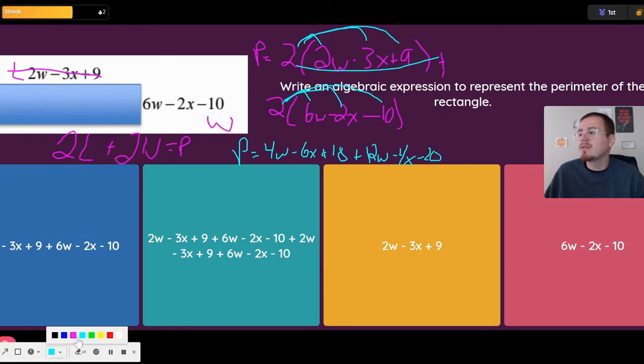You might say that's your answer and you could technically be right, but you need to make sure that you simplify. We're going to combine all like terms. I got 4w and 12w, that's 16w. We got negative 6x and negative 4x, that's negative 10x. We got 18 and negative 20, which is negative 2.